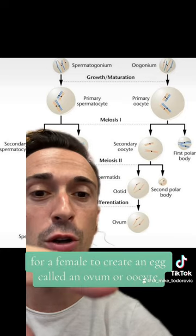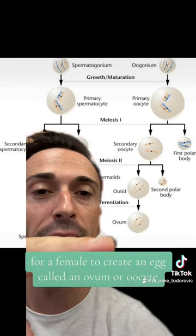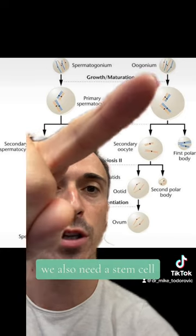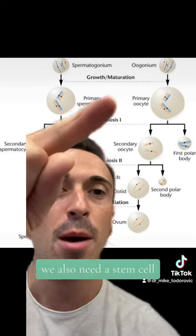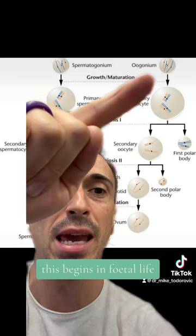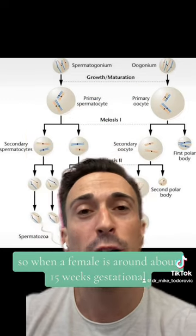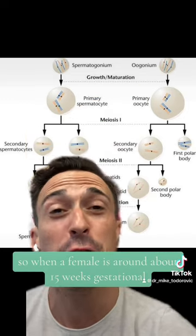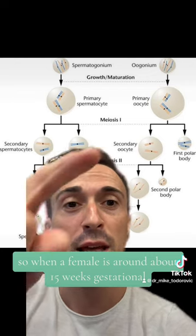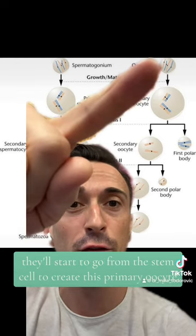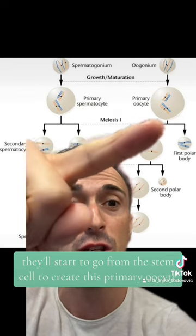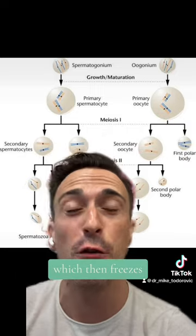For a female, to create an egg called an ovum or oocyte, we also need a stem cell, but this doesn't begin at puberty — this begins in fetal life. When a female is around 15 weeks gestational, they'll start to go from this stem cell to create a primary oocyte, which then freezes.